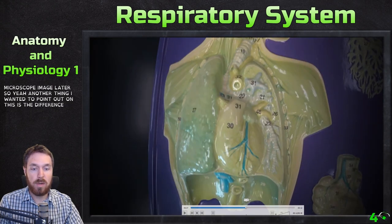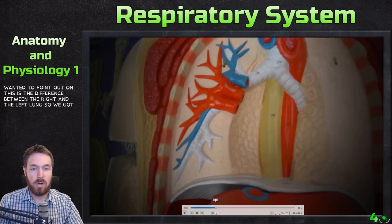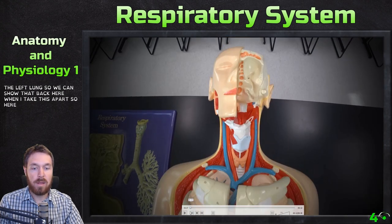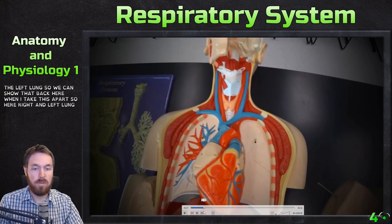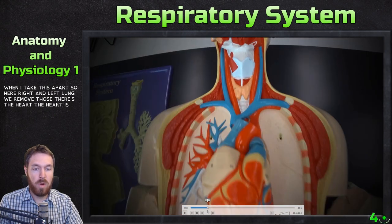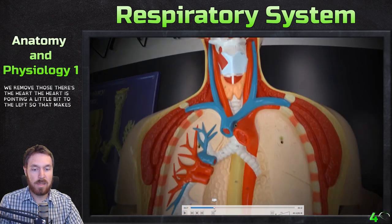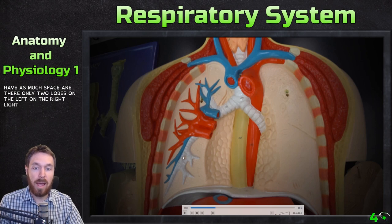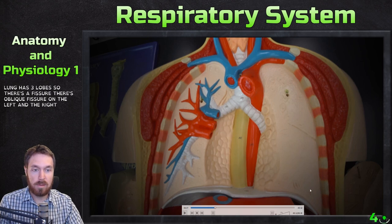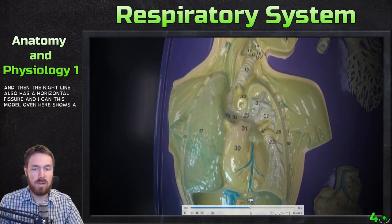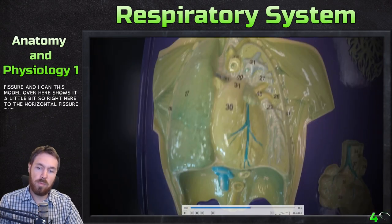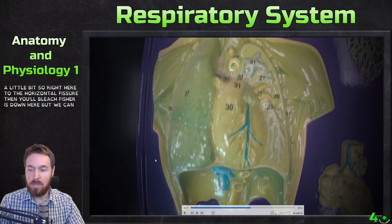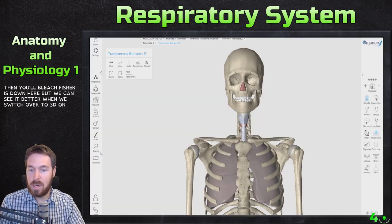Another thing to point out is the difference between the right and left lung. Taking the thorax model apart, we can see the heart points slightly to the left, which means the left lung has less space and therefore only two lobes. The right lung has three lobes. There is an oblique fissure on both left and right separating lobes, and the right lung also has a horizontal fissure. This model shows it, and we can see it even better when we switch to 3D Organon.